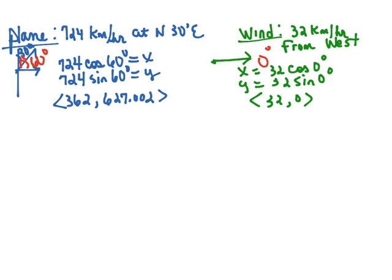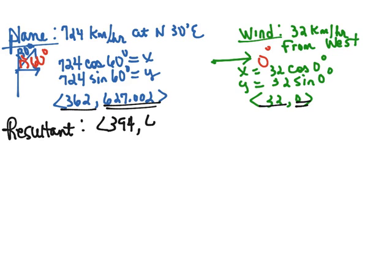So our resultant would be the sum of the plane plus the wind. So 362 plus 32 would give us 394. And 627.002 plus 0 is 627.002. And so that is our resultant of the plane and the wind written in vector component form.